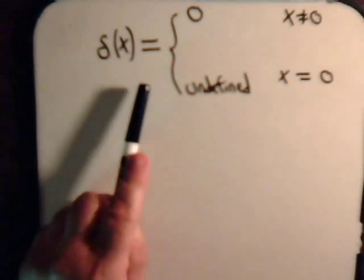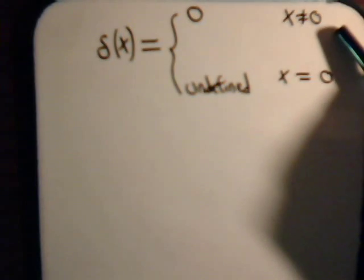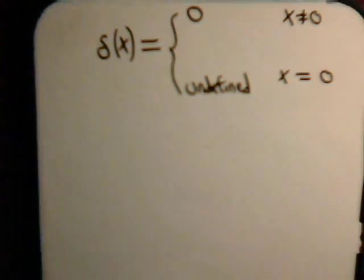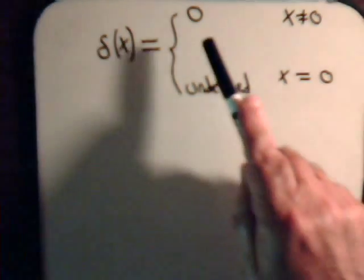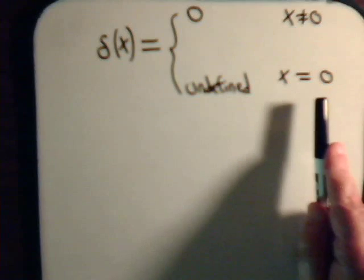This is the symbol for it. Whenever the argument here does not equal zero, whenever this is a non-zero quantity, the Dirac Delta function equals zero. And when this is zero, then it is undefined.